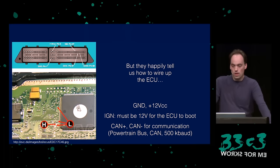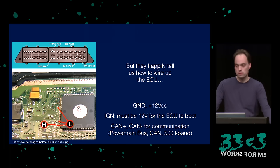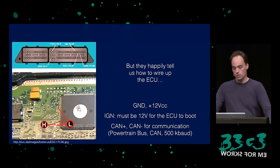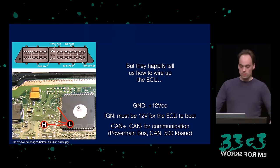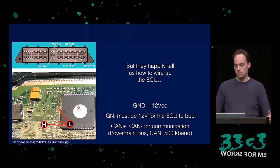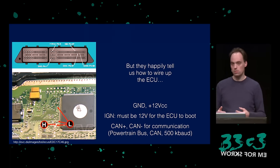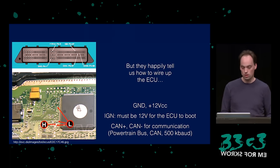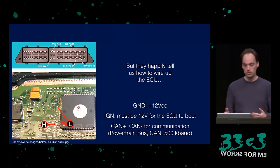I wanted to start on my own. What these chip tuner sites usually tell you without paying is how to wire up your ECU — where to connect 12V, where to connect the CAN bus, which is the serial communication bus the ECU uses to communicate with the rest of the car. When analyzing an ECU, it makes a lot of sense to reproduce the scenario on your desk and not in your car. All you need is ground, 12V, and usually an ignition pin you also supply 12V to, and then it boots. On my desk, it looked something like this.